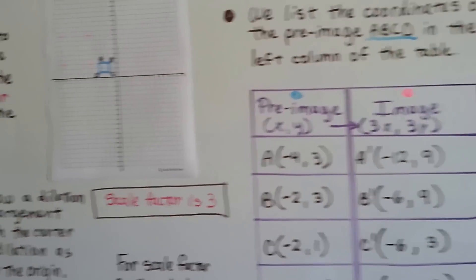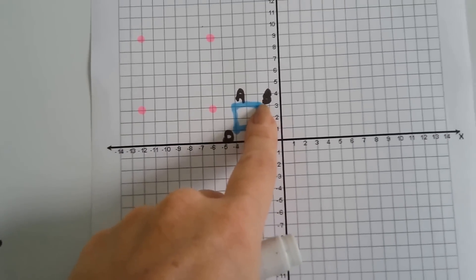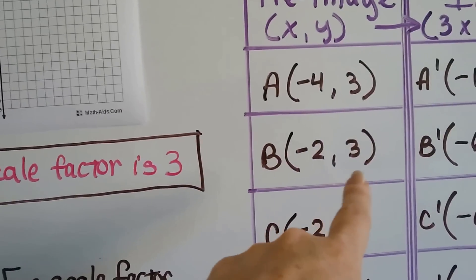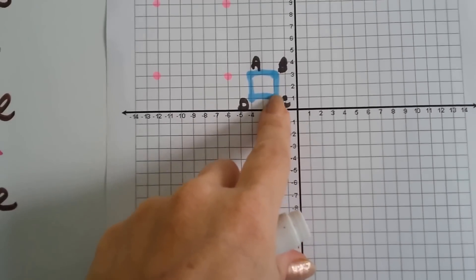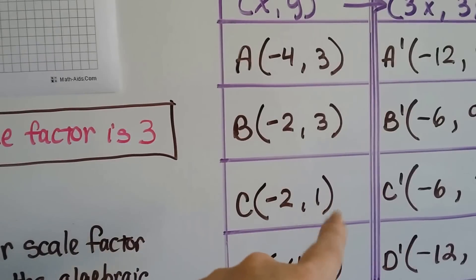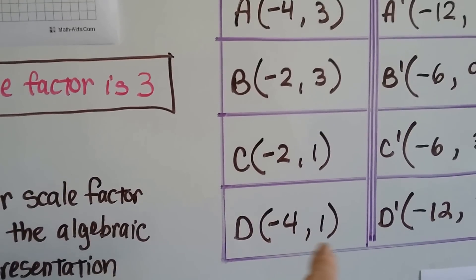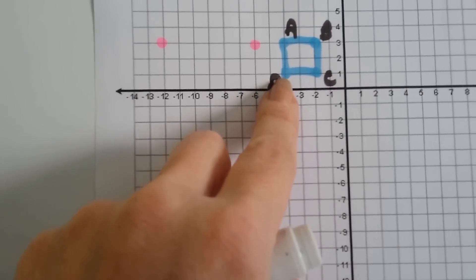So we've got negative 4, 3 for a. We can see that b is at negative 2 and 3. c is at negative 2 and 1, right here. See that? c is at negative 2, 1, and d is going to be at negative 4, 1. Negative 4 and 1.